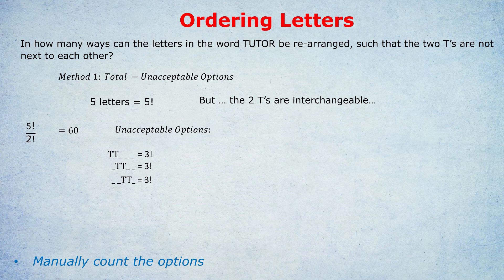Adding up these unacceptable options, we have four sets of three factorial. Three factorial is six and four times six is 24. So in total, there are 24 unacceptable options. And so we do the total, which is 60, we worked that out earlier, take away the unacceptable options, 24, leaving us with the desired options of 36. And that's the correct answer.